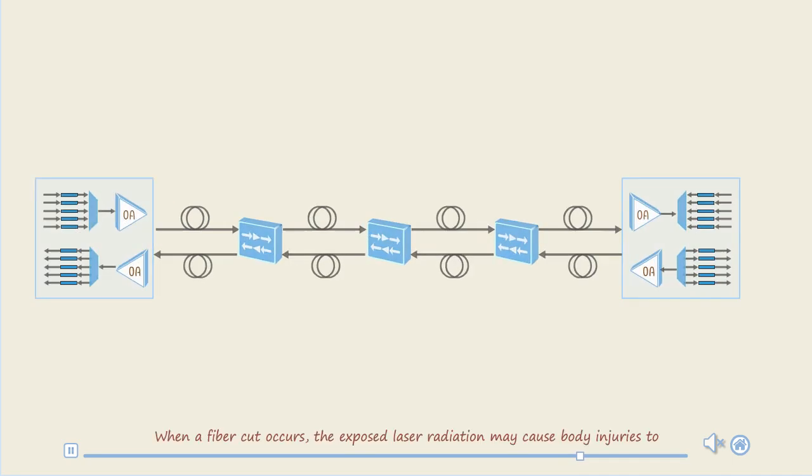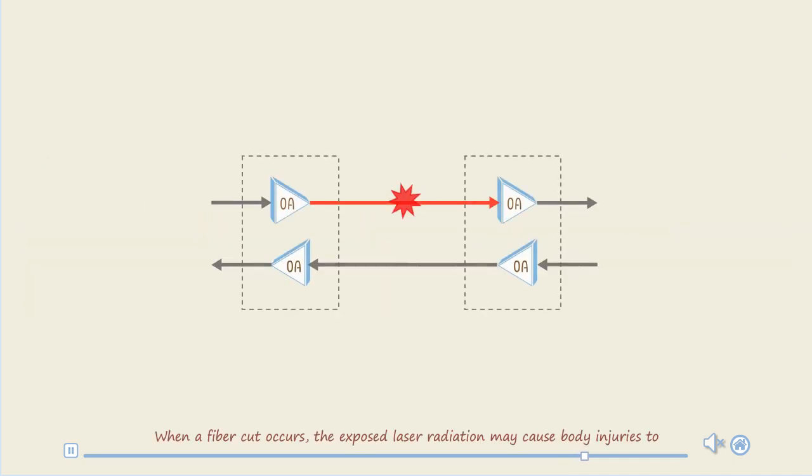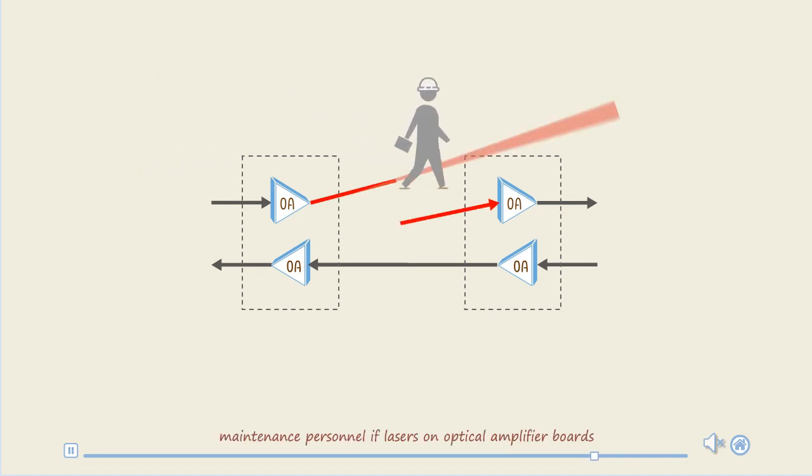When a fiber cut occurs, the exposed laser radiation may cause body injuries to maintenance personnel if lasers on optical amplifier boards are not shut down immediately. The IPA function can promptly shut down the lasers on optical amplifier boards, preventing body injuries.